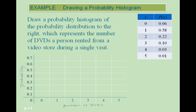For x equals 0, the probability was 0.06. For x equals 1, the probability was 0.58, almost to 0.6. For x equals 2, it was 0.22. For x equals 3, it was exactly 0.10. For x equals 4, it was 0.03, and for x equals 5, it was 0.01.